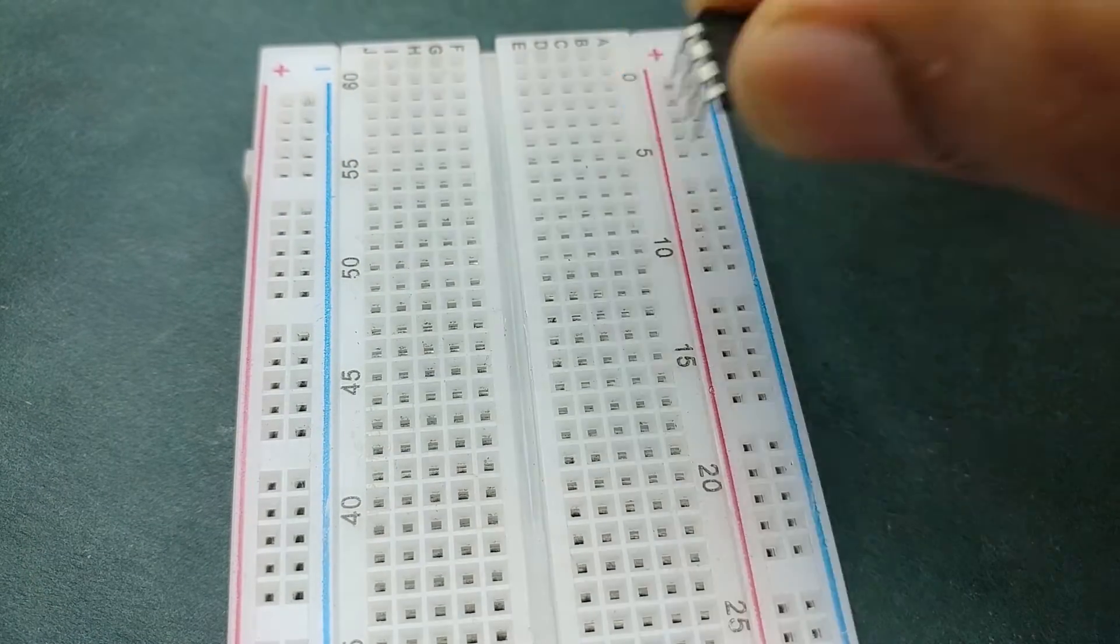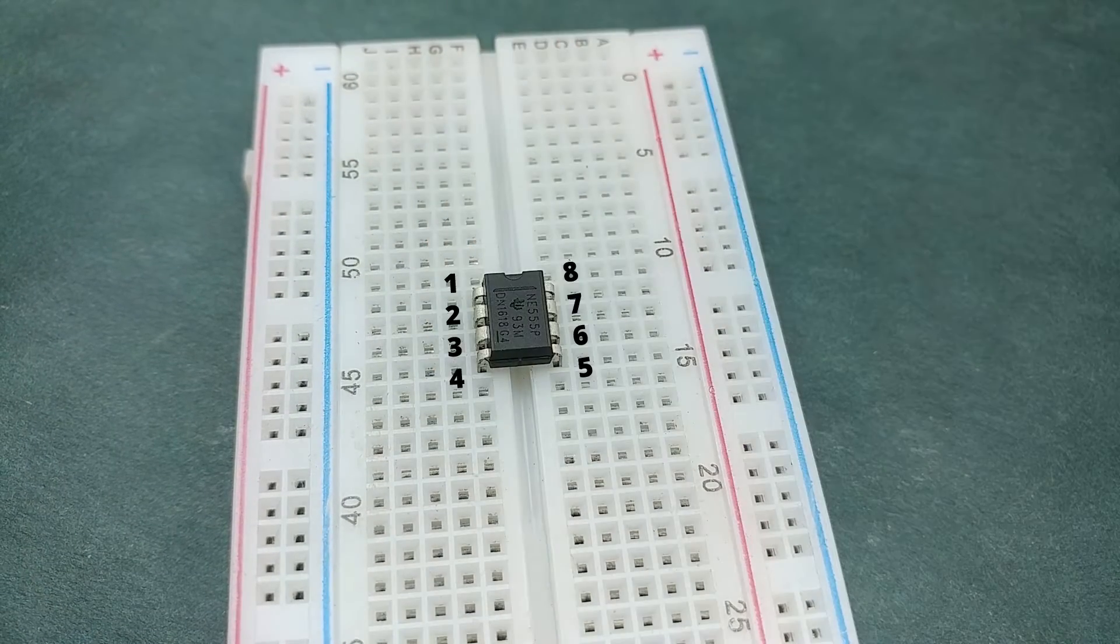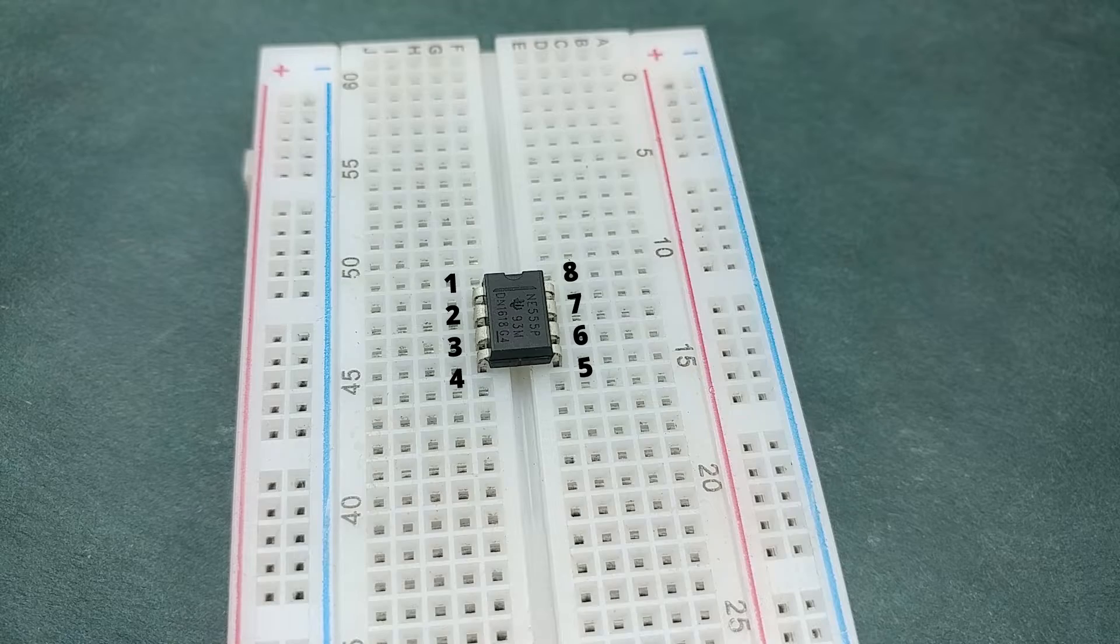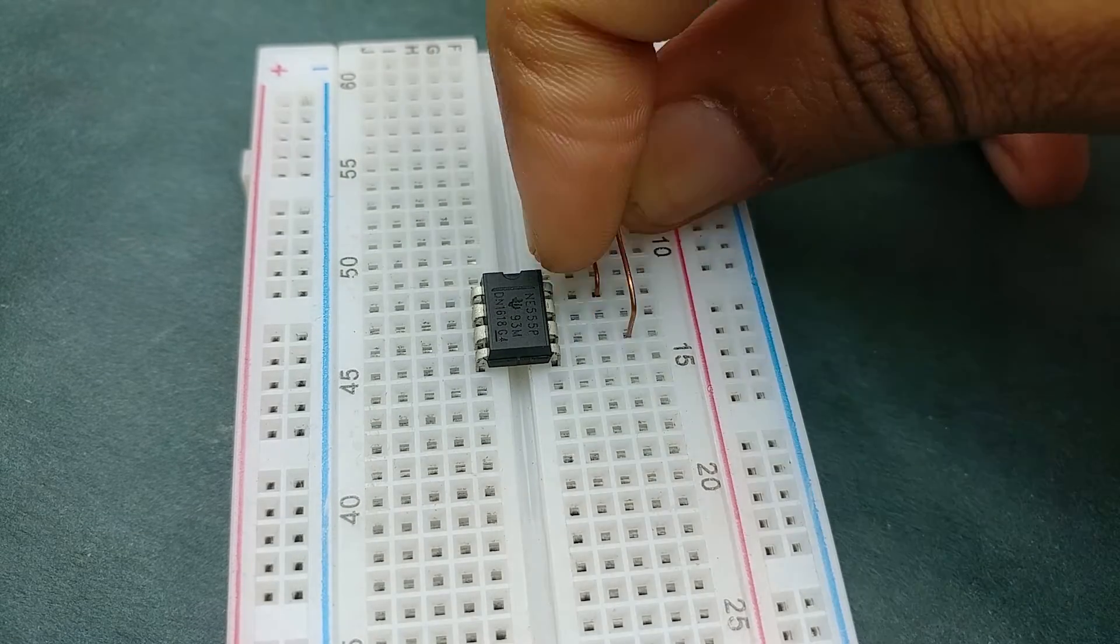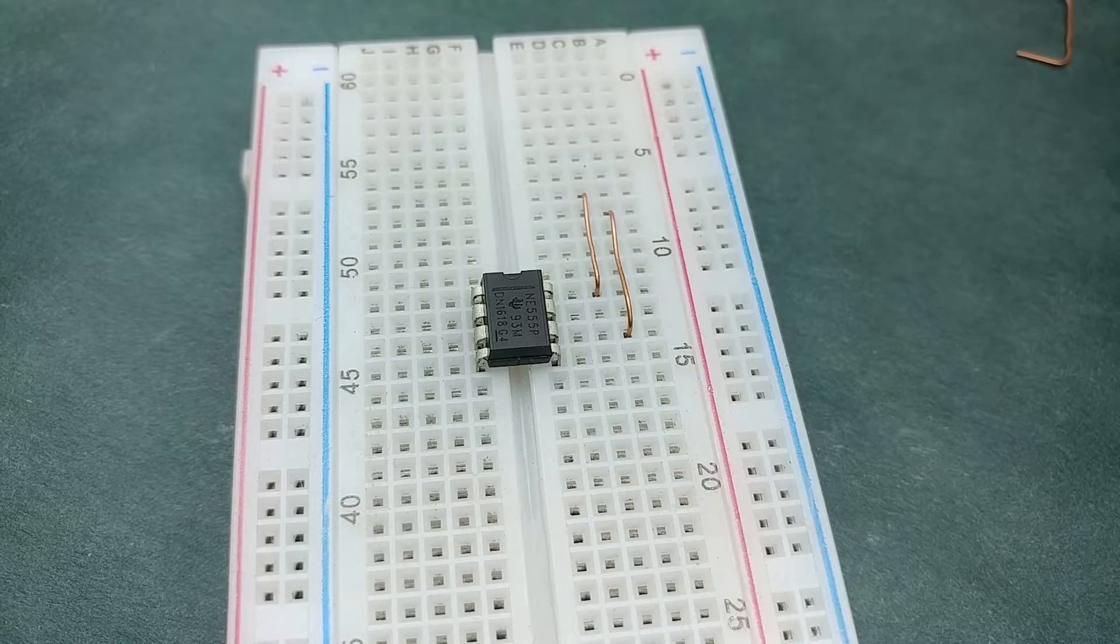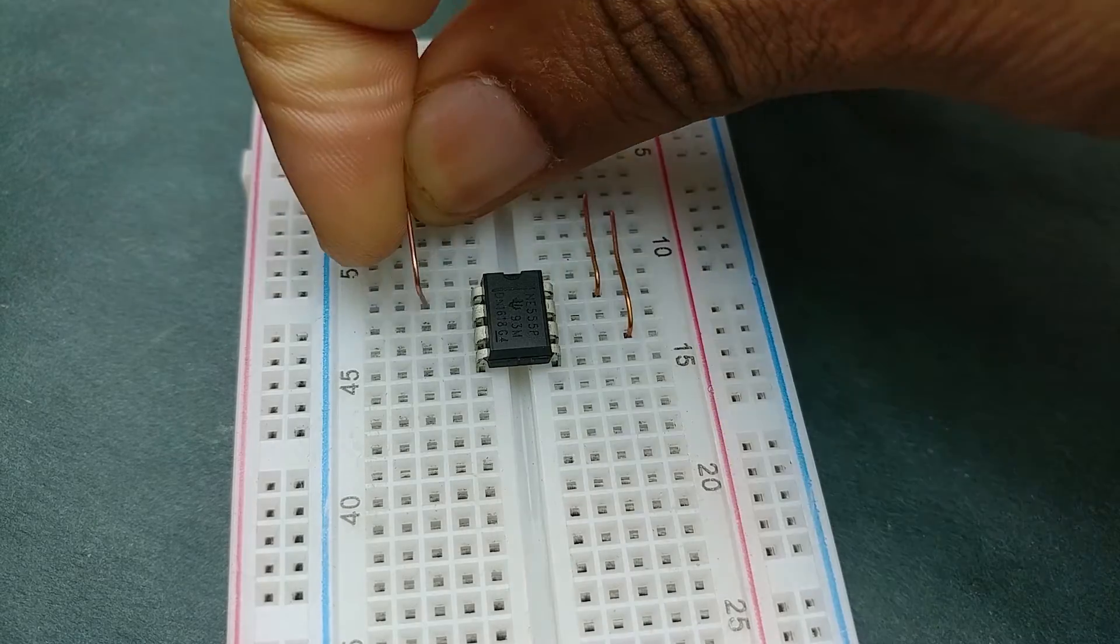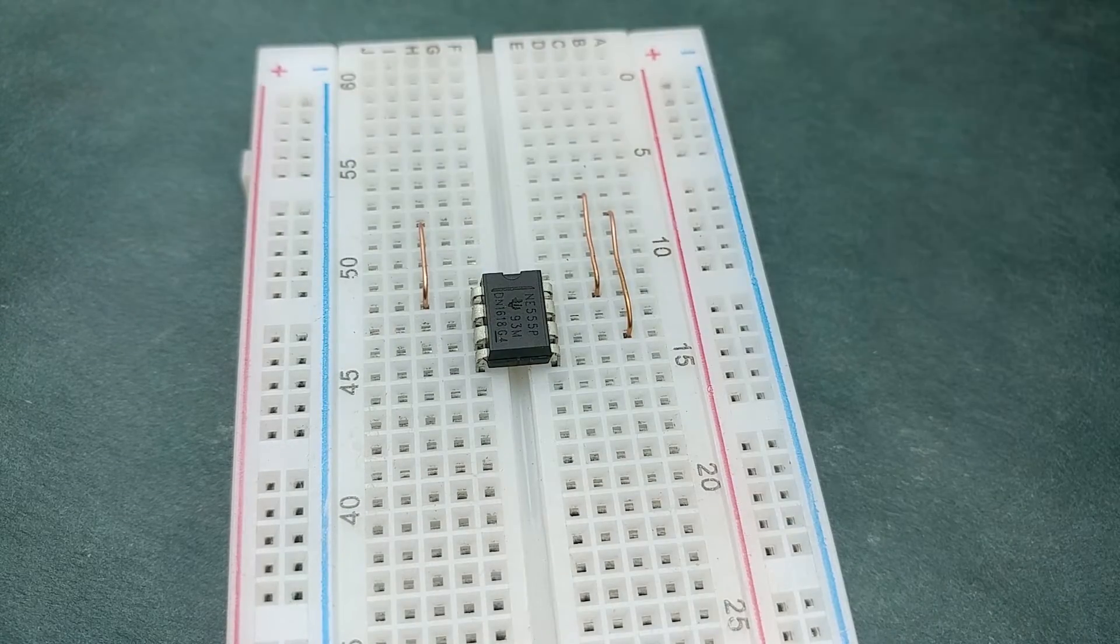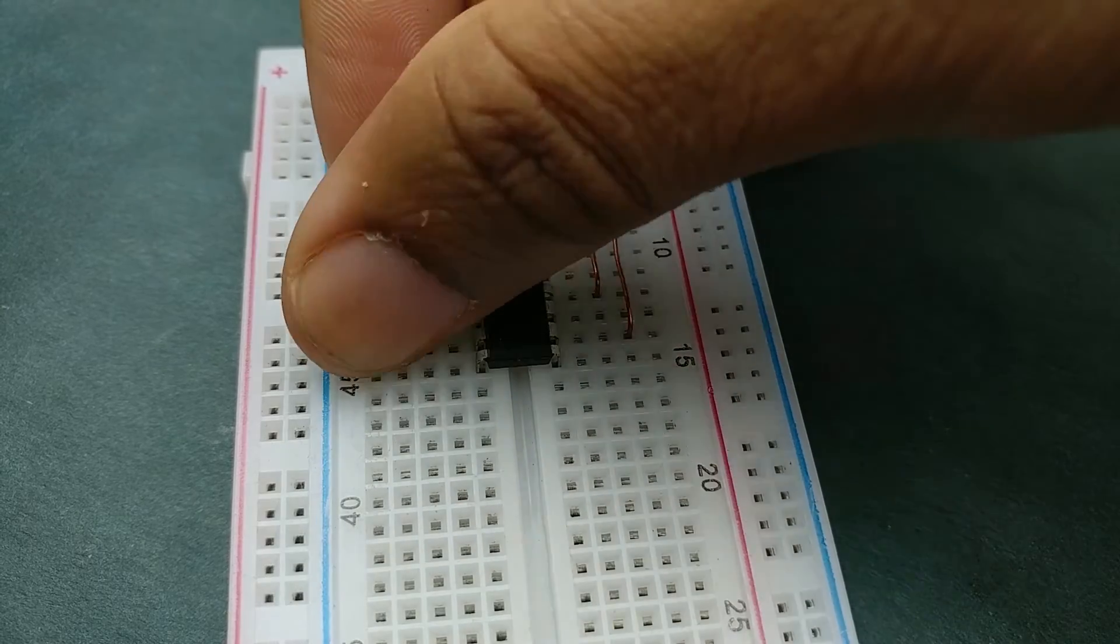Place 555 timer IC on the breadboard with its notch facing up and the pinouts are as shown. Now place touch contacts at pins 8, 6, 1, and 2. You can use any connecting wire and you should be careful that you don't connect any two touch wires in the same row.